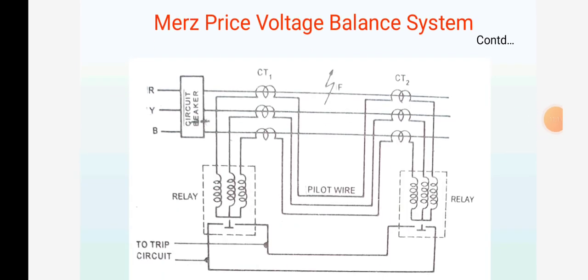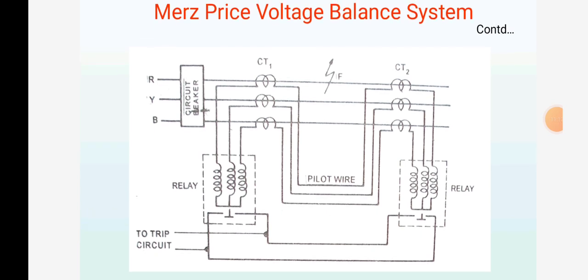This is the diagram for the Merz-Price voltage balance system. It has one circuit breaker, three-phase RYB, three CT1 current transformers and three CT2 current transformers. They are connected with pilot wire, and it has two relays. The relays are connected to the trip circuit.